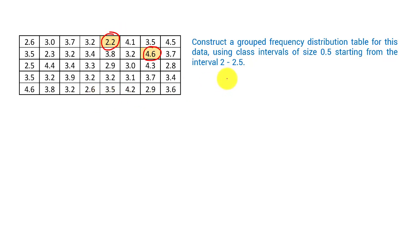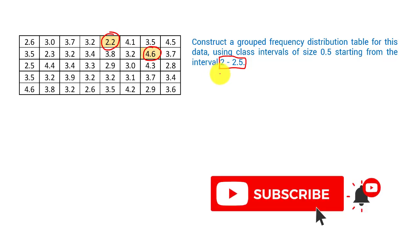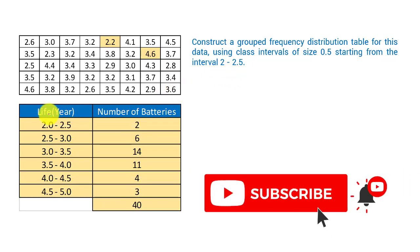The question states which interval to start from. This class interval will suit our needs. I will make a table in which the first column is the battery life class interval, and in the second column, the number of batteries.